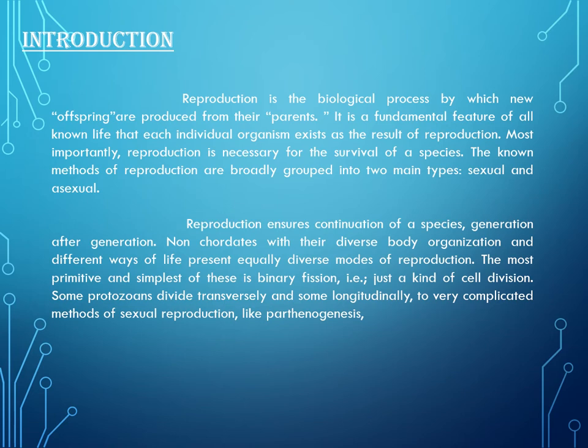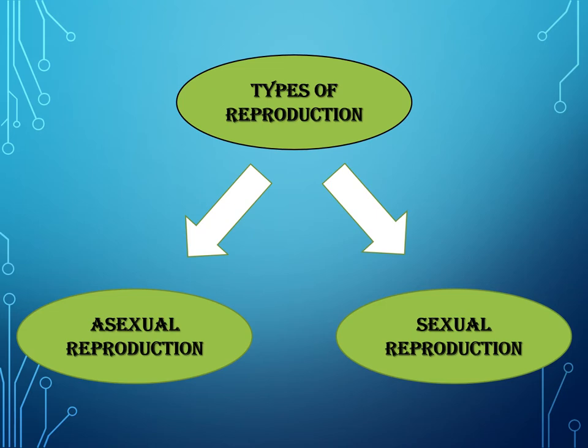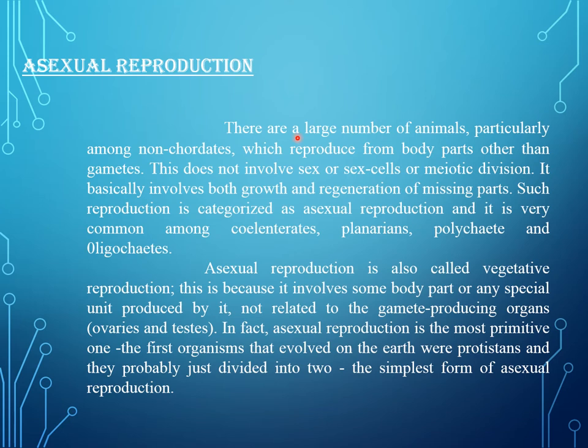Reproduction ensures continuation of species, generation after generation. Non-coordinated animals with their diverse body organization and different ways of life present equally diverse modes of reproduction. The most primitive and simplest is binary fission, just a kind of cell division. Some protozoans divide transversely and some longitudinally. Two very complicated methods include sexual reproduction like parthenogenesis. Types of reproduction: first asexual reproduction, then sexual reproduction.